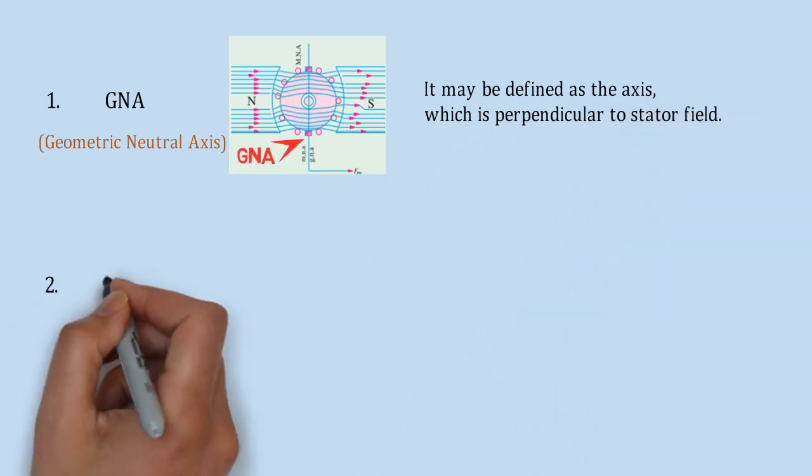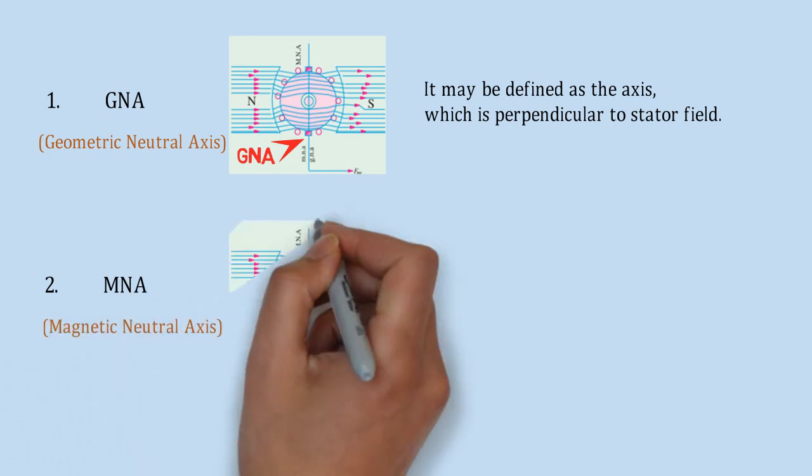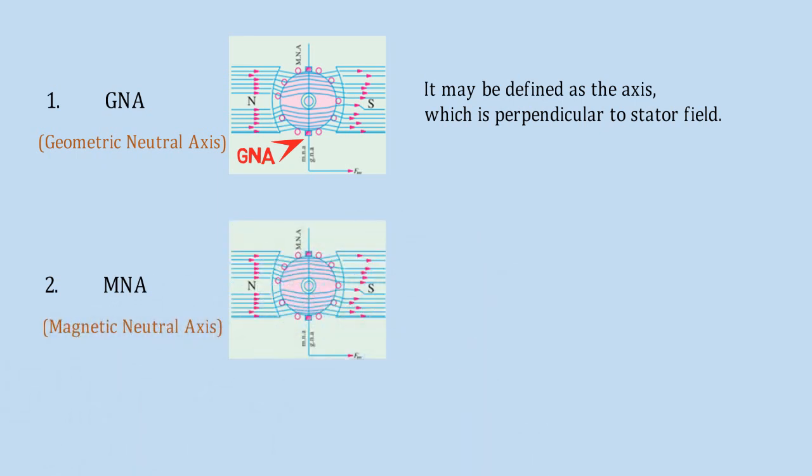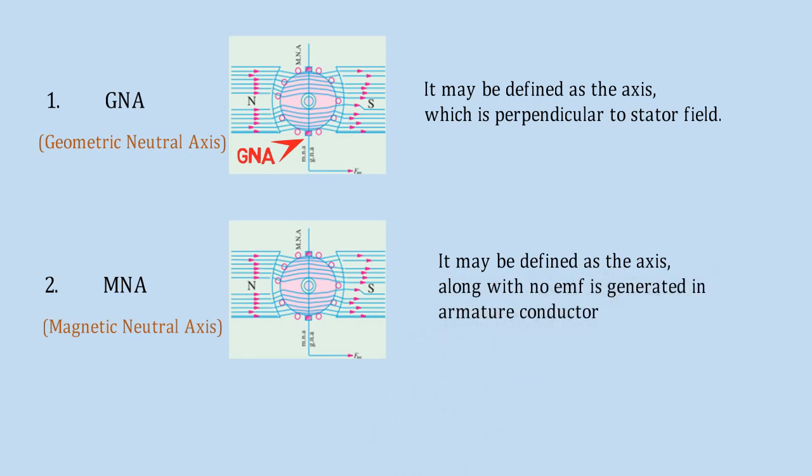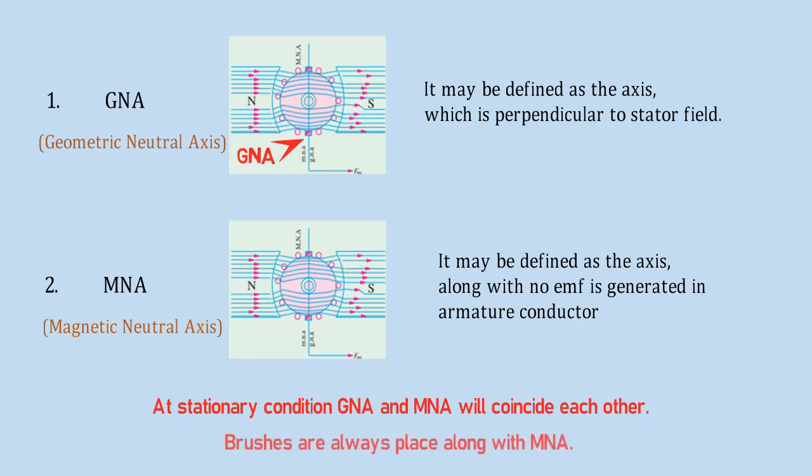Second is magnetic neutral axis. MNA may be defined as axis where no EMF is generated along the armature conductor. At stationary condition, both GNA and MNA coincide with each other. Brushes are always connected to MNA.